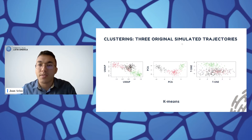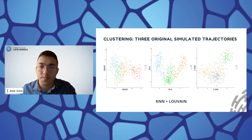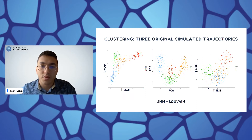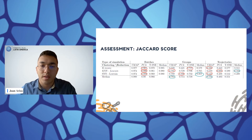For the simulated trajectories, in every method we can generally see the structure: the central cell type as a central node, and then two other cell types coming out of it like a graph. Looking at the Jaccard score results for batches, over every combination the mean Jaccard score is over 95%, so there is no problem in this type of simulation for any method.